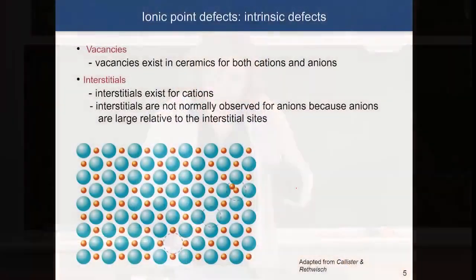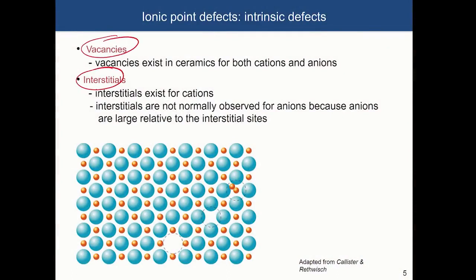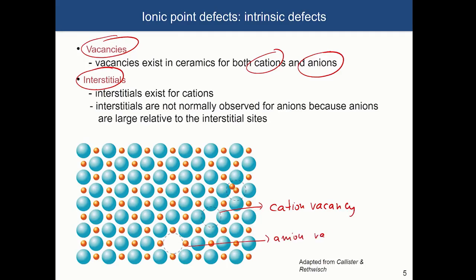When we talk about ionic point defects, we can again form vacancies and interstitials. Vacancies can exist in ionic materials and ceramics both for cations and anions — you can simply remove them from the lattice. For interstitials, however, they typically exist only for cations, because cations are much smaller than anions. In ionic crystals, there is a huge energy penalty to introduce an anion interstitial.